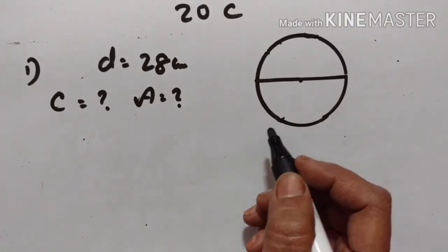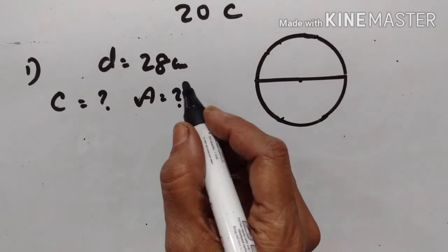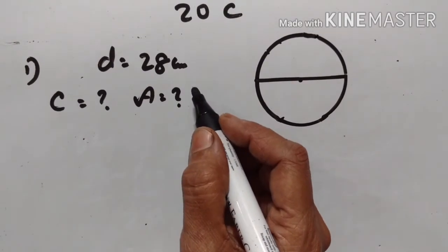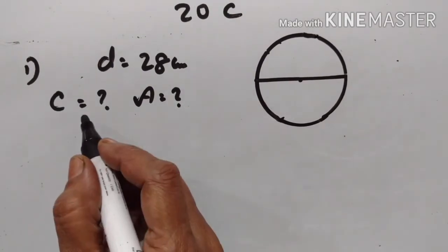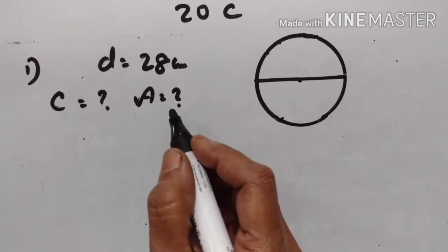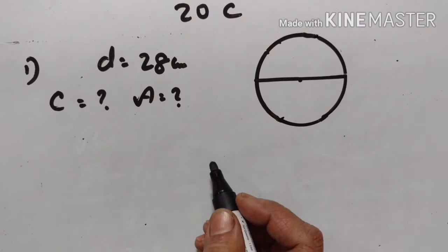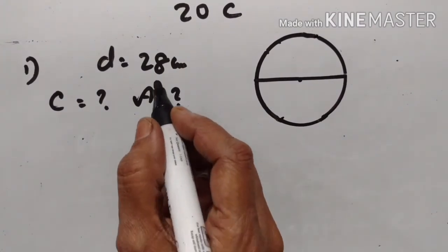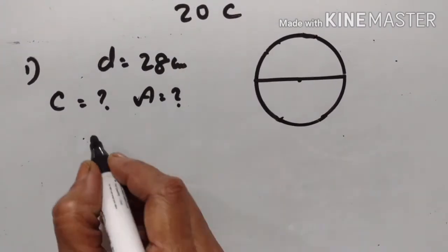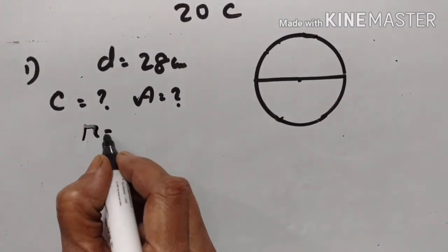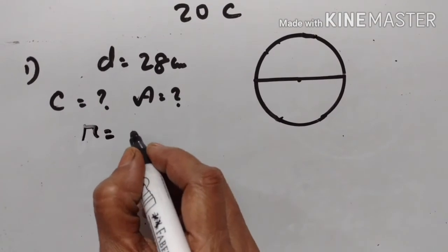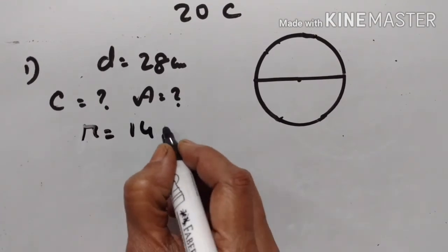The diameter of a circle is given — it is 28 cm. You have to find its circumference and its area. What is the radius? Radius is equal to half the diameter, so radius is equal to 28 divided by 2, that is 14 cm.